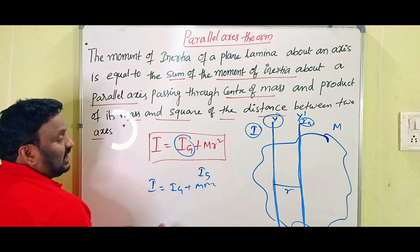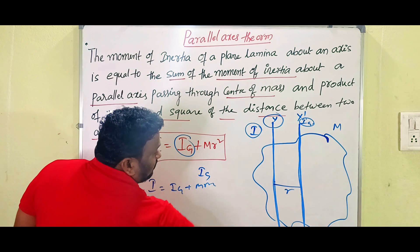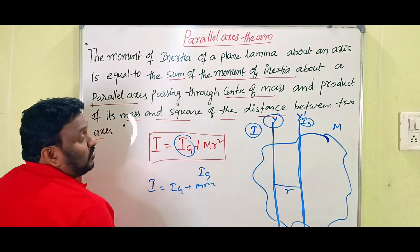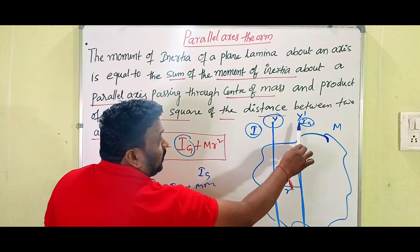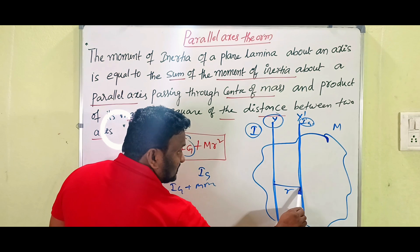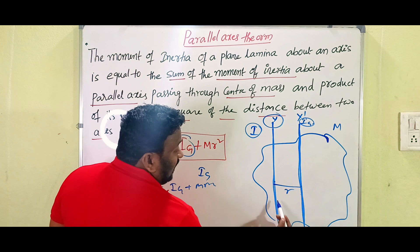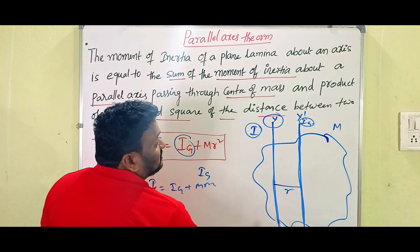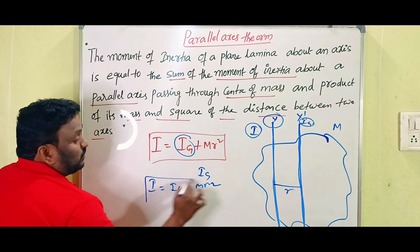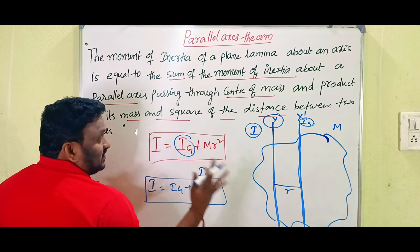This is the parallel axis theorem. The moment of inertia of the plane lamina about one axis equals the sum of the moment of inertia about an axis passing through the center of mass, and the product of the mass of the body and the square of the distance between the two axes — that is MR². So I = Ig + MR². This is called the parallel axis theorem.